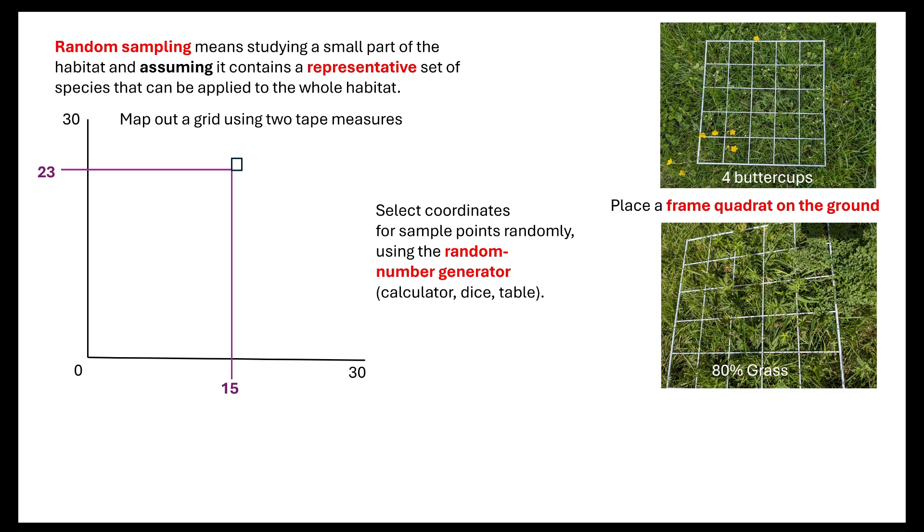We place the frame quadrat on the ground and then we look at what is in that frame quadrat. If we're looking at plants or slow-moving animals like limpets and barnacles, we're going to identify them using either a dichotomous key or some pictures so that we can correctly identify them and then count the number of individuals that are present.